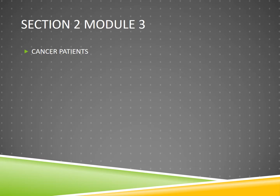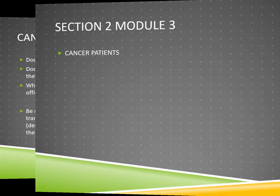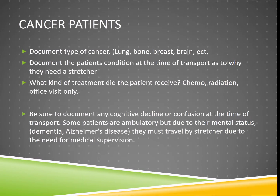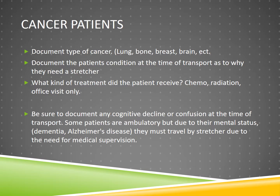Section 2, Module 3 — we're going to go over cancer patients. When you transport a patient to chemo or radiation, we must have documented the type of cancer they have. You need to paint a picture of the patient's condition at the time of transport as to why they need a stretcher.